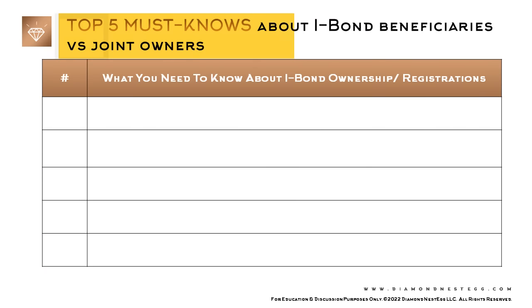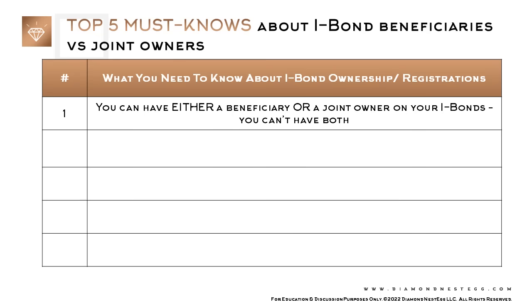Here are the top five things you need to know about beneficiaries and joint owners when it comes to iBonds that you own in your personal or individual Treasury Direct account. Number one: you can have either a beneficiary or a joint owner on your iBonds. You can't have both.